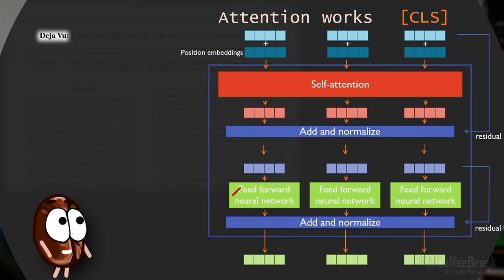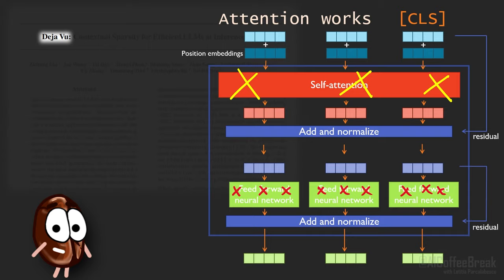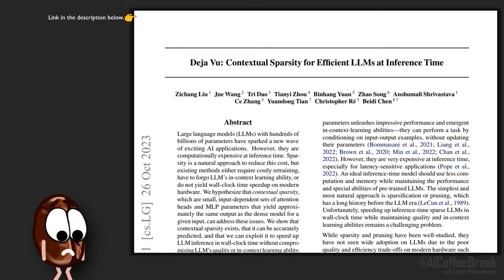Sparsity means that the transformer only uses a fraction of its neurons and attention heads on each input. And this method that makes sparsity work at inference is introduced in the Déjà Vu paper. It is not easy to make an LLM sparse only after training, so at inference.